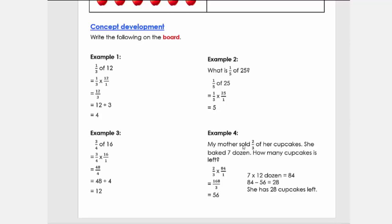We want two-thirds and seven that we can see, but we also need to read the problem to see if there are any hidden numbers. My mother sold two-thirds of her cupcakes. She baked seven dozen. So here we have our hidden number: seven dozen. Seven dozen is seven times 12 equals 84. We already know it's a dozen, so it's seven times 12 equals 84.